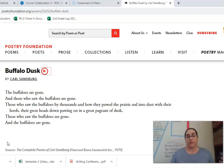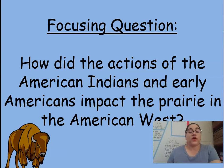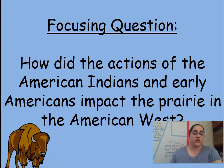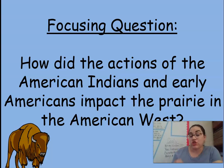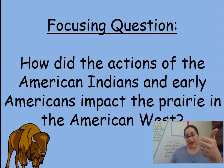We will look closely at The Buffalo Are Back — the book — to see how the events happened and how things got to where they are now. Our focusing question is very important not to forget: How did the actions of the American Indians and early Americans impact the prairie in the American West? Don't forget this question. Remember, boys and girls, you're looking at two key words: actions and impact — how did the actions of the people change the prairie of the American West?